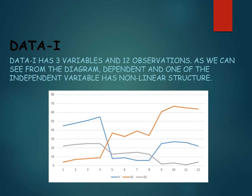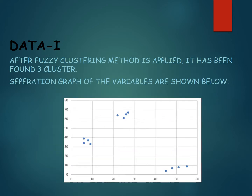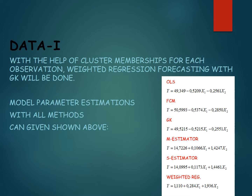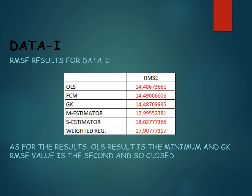Data 1 has three variables and 12 observations. As you can see from the diagram, the dependent and one of the independent variables have a non-linear structure. After the fuzzy clustering method is applied, three clusters are formed, and the separation plot of the variables is shown below. With the help of cluster memberships for each observation, weighted regression forecasting with Gustafson-Kessel is performed. The RMSE results show that ordinary least squares gives the minimum value, and Gustafson-Kessel is second and very close to ordinary least squares.